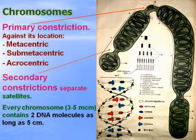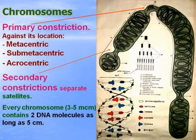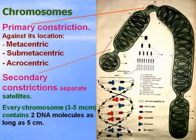Chromosomes — in this picture during mitosis, when they are highly spiralized and maximally condensed — have a primary constriction, or kinetochore. Based on its location, chromosomes are divided into metacentric (with equal arms), submetacentric, and acrocentric (when one arm is much longer than the other). There are also secondary constrictions which separate satellites.